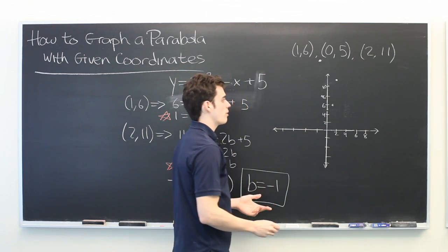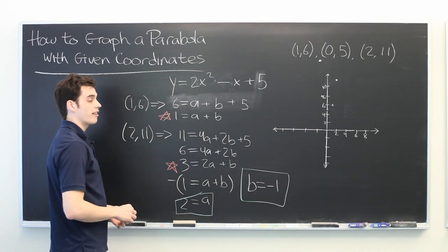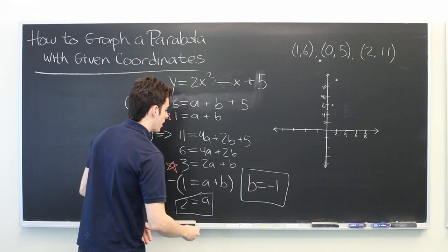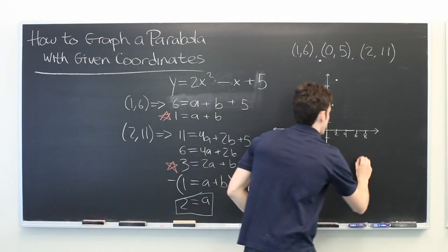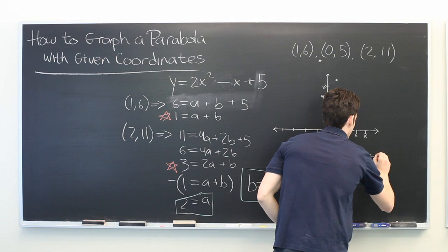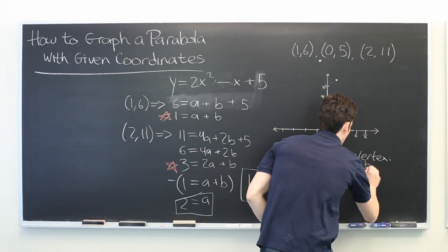So, lastly, why don't we find the vertex of our parabola, which is given by negative b over 2a. Two quantities that we know. We'll go ahead and write it down here. The x-coordinate of our vertex is given by negative b over 2a.